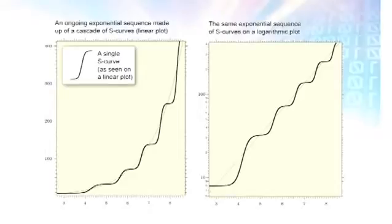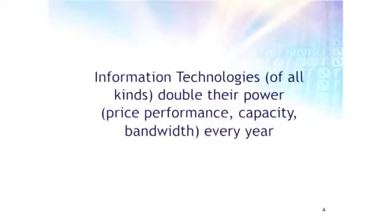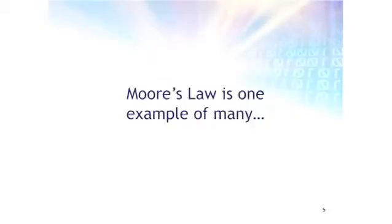Information technology progresses through a series of S-curves where each one is a different paradigm. People say, well, what's going to happen when Moore's Law comes to an end, which will happen around 2020? We'll then go to the next paradigm. Moore's Law was not the first paradigm to bring exponential growth to computing. The exponential growth of computing started decades before Gordon Moore was even born, and it doesn't just apply to computation. It's really any technology where we can measure the underlying information properties.